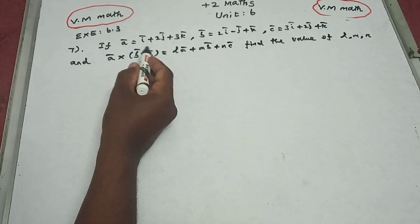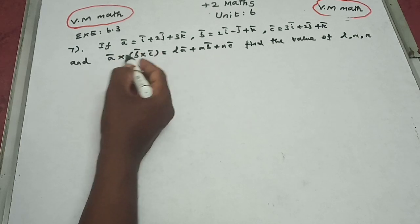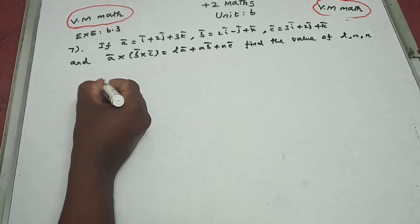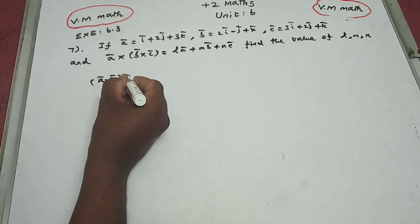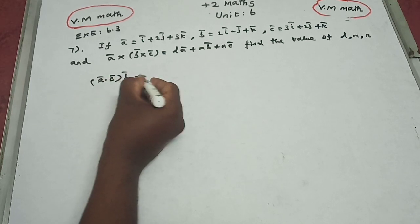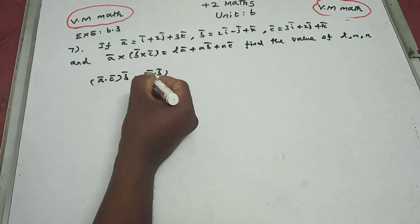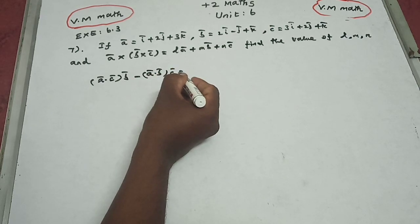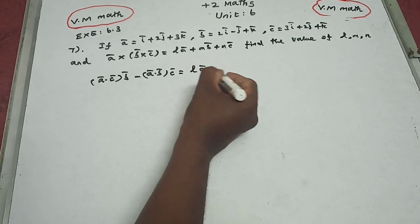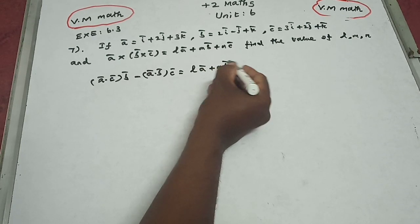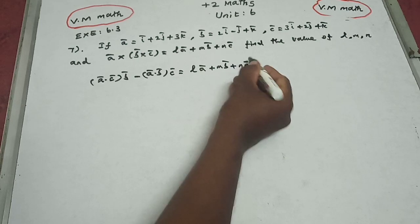By the definition of the vector triple product, a × (b × c) equals (a·c)b - (a·b)c, which equals la + mb + nc.